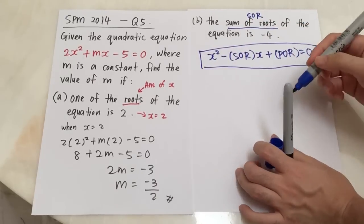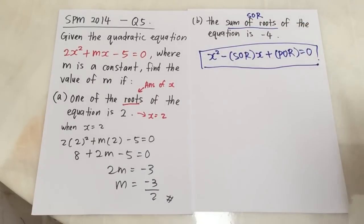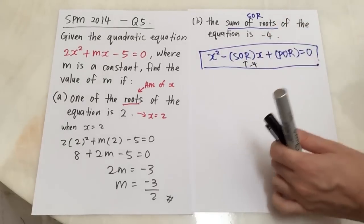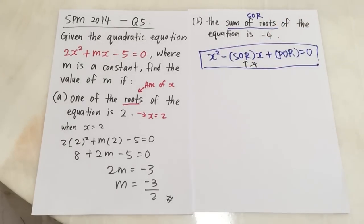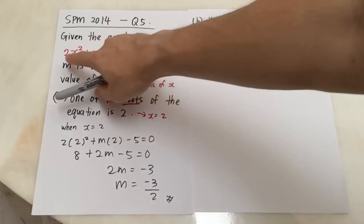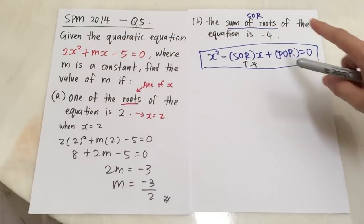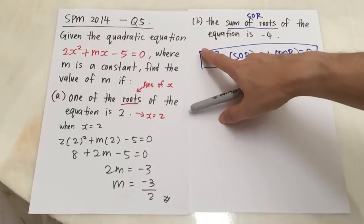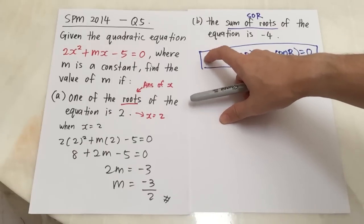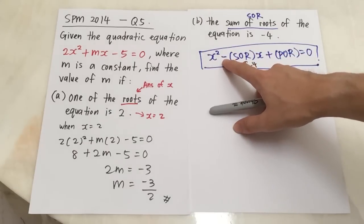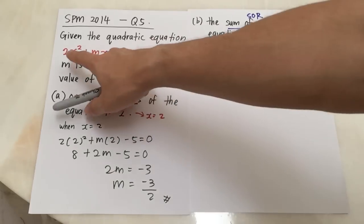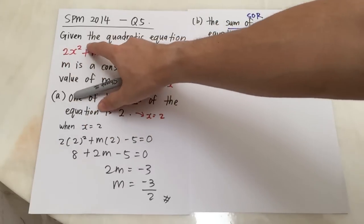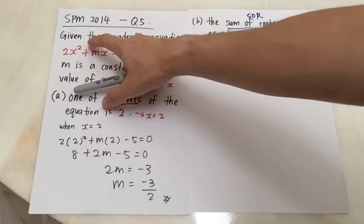Okay, so the question is trying to tell me sum of root is negative 4. So that means this one will be negative 4. So what I want to do here is I will change this equation into this pattern. I say this formula, you have two things you need to pay attention. First is the coefficient for x squared is always 1. The second is this one is always negative.